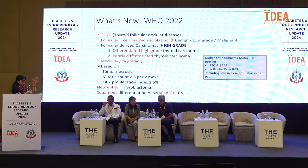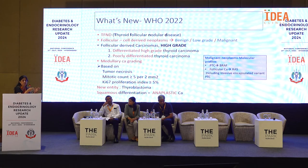Thyroid follicular nodular disease essentially includes all lesions with multinodular goiter-like appearances clinically. It encompasses the entire spectrum of mostly benign lesions from hyperplasia, multinodular goiter, and thyroiditis, to even some follicular adenoma — from hyperplastic to neoplastic lesions with multiple nodules. We have now categorically classified follicular cell-derived neoplasms into benign, low-grade, and malignant categories. This helps in following up the low-grade tumors more stringently, as they have a propensity for late metastasis.